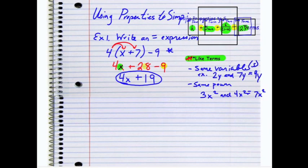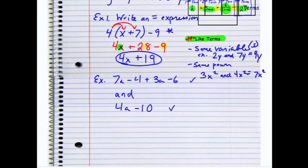So the next example that we'll do is going to say Jenny says that 7A minus 4 plus 3A minus 6 and 4A minus 10 are equal. So Jenny tells us that this equation and this equation are equal. Is she right? Well, let's take a look.